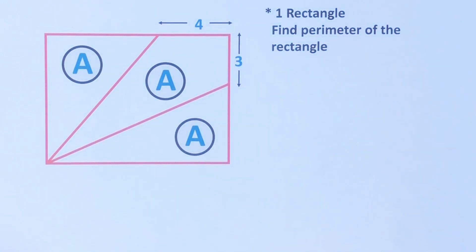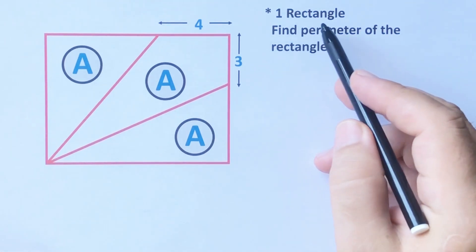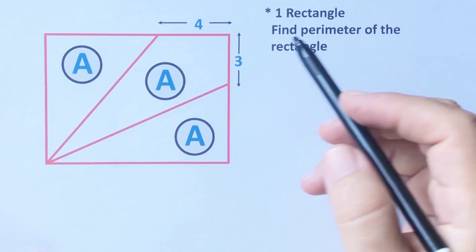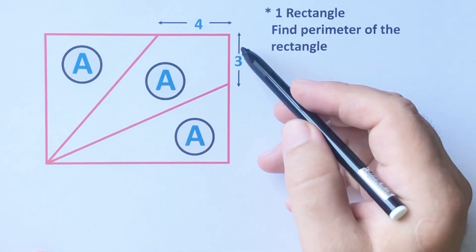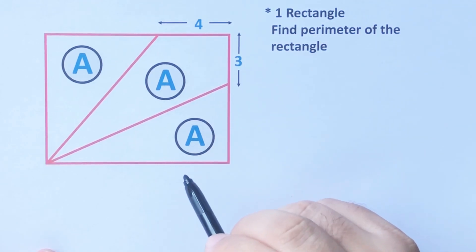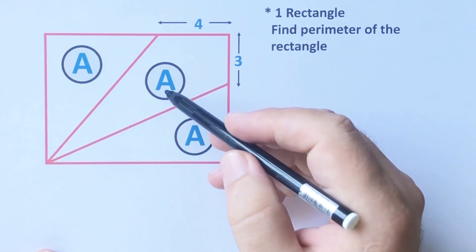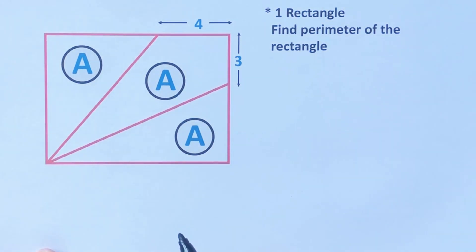Hello everyone, in this video we have one rectangle. This length is four units and here is three units, and then these three areas are equal.